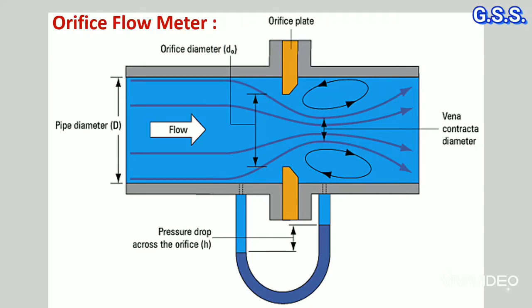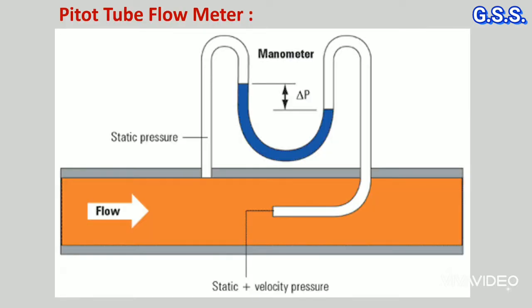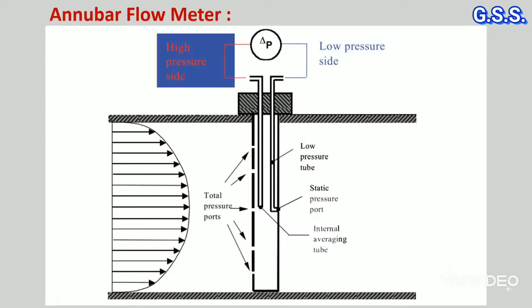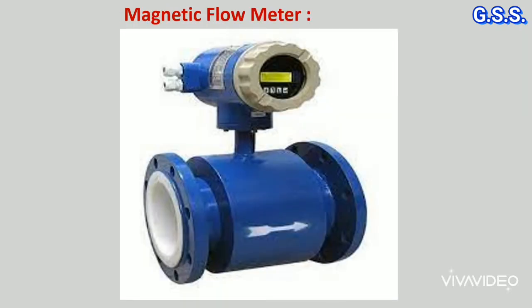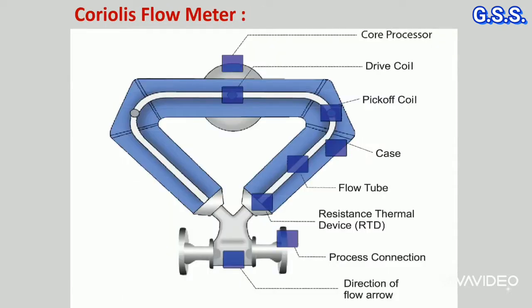In piping systems, commonly used flowmeters are orifice flowmeter, pitot tube flowmeter, anubar flowmeter, venturi flowmeter, magnetic flowmeter, and coriolis flowmeter.